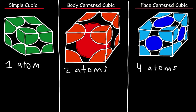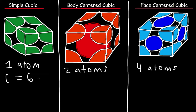The coordination number of the simple cubic structure is 6. The coordination number is the number of atoms attached to a single atom. So every atom in the simple cubic structure is attached or adjacent to 6 other atoms.